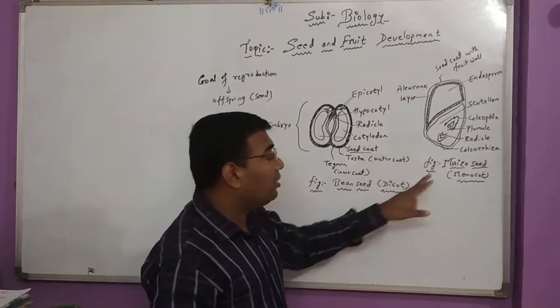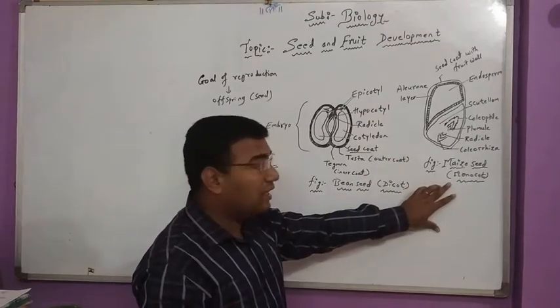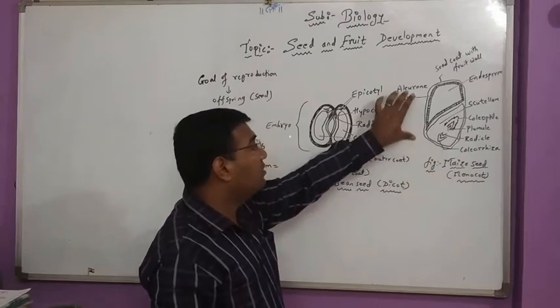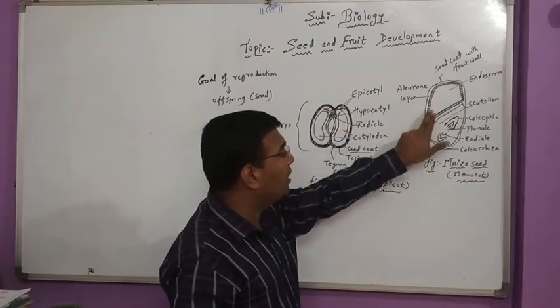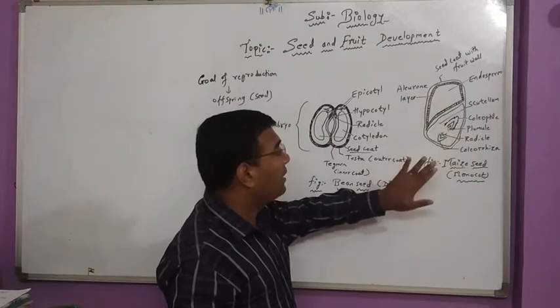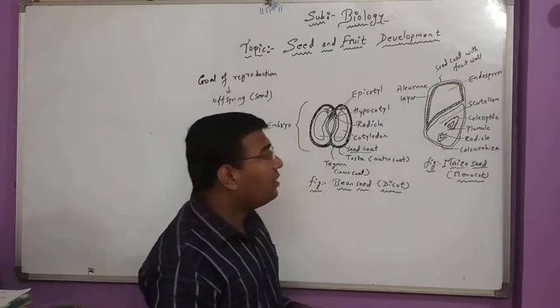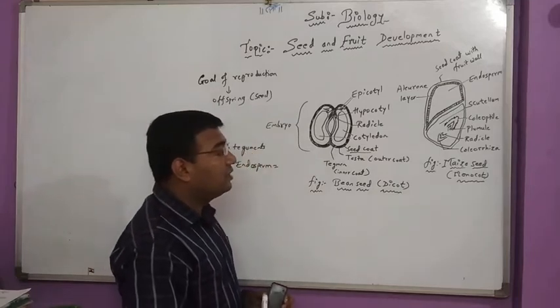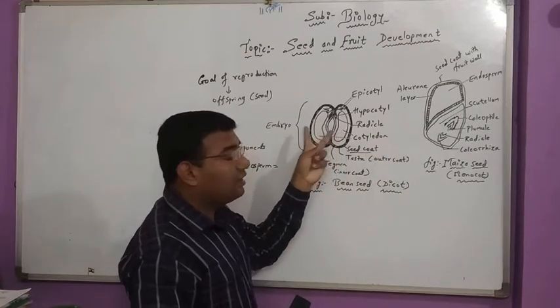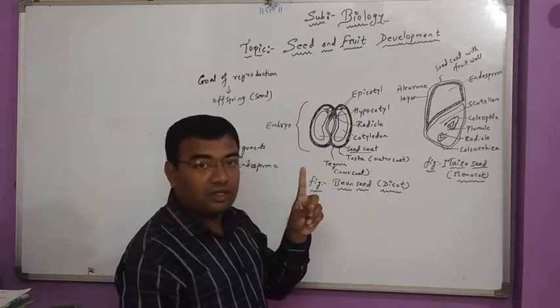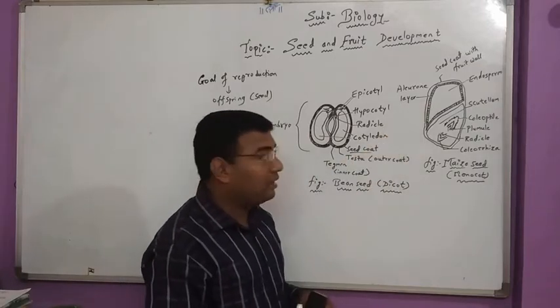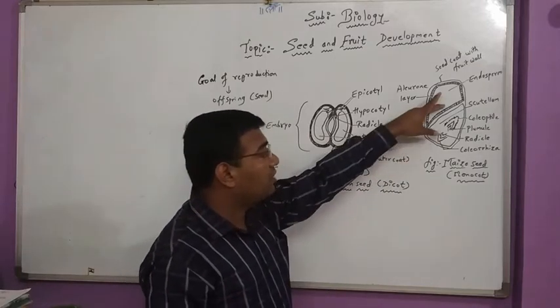Now when we are seeing about a maize seed, this is a monocot example. We see here there is an aleurone layer. It is a thin layer which is having the development in both the parts where the seed coat is fused with a fruit wall. In the monocot, generally we see that instead of division of the two cotyledons, there is a single cotyledon where the growth of the terminal part is in the form of the endosperm.